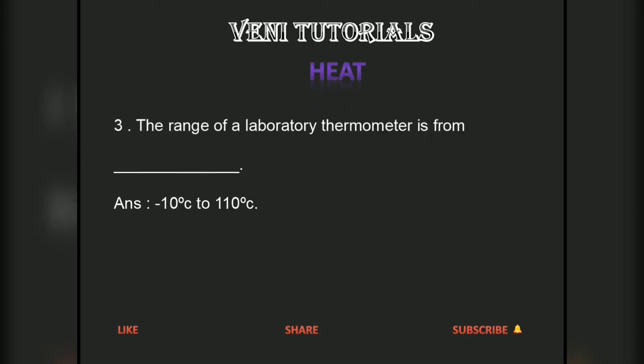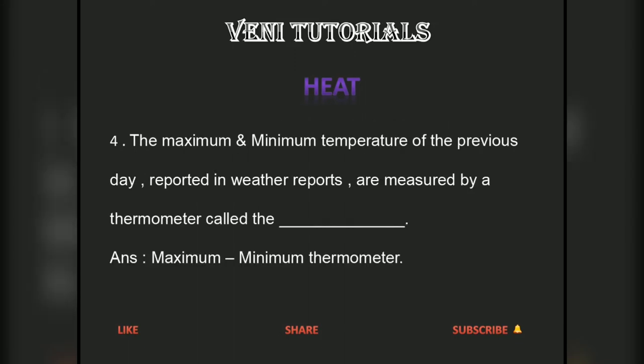The range of a laboratory thermometer is from minus 10 degrees centigrade to 110 degrees centigrade. The maximum and minimum temperature of the previous day reported in weather reports are measured by a thermometer called the maximum-minimum thermometer.